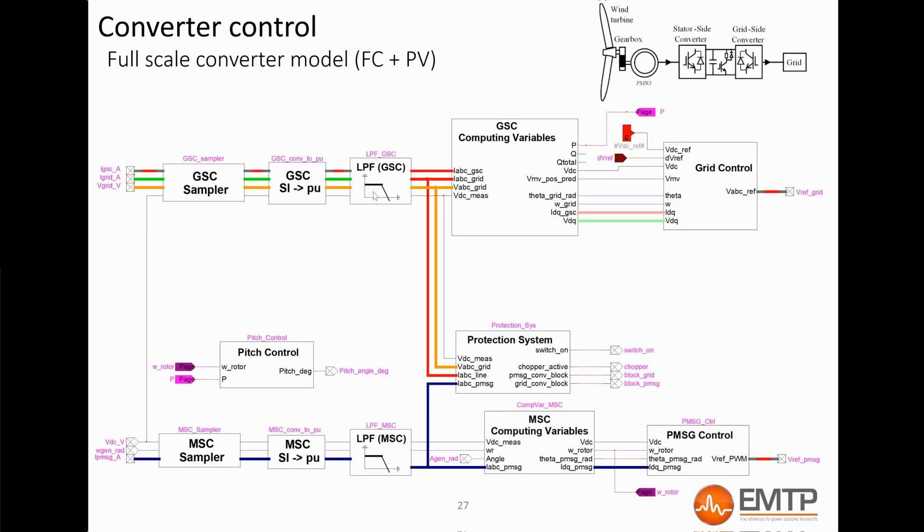Here is the control and protection diagram of the FC wind turbine in EMTP. The sampled signals, which are the voltage and current on each side of the converter, are put in per unit and filtered. The input measuring filters are low-pass type. The compute variables block computes the variables used by the FC control and protection system. In these blocks, you will find PLLs, which are algorithms which determine the voltage angle and frequency and help to achieve the transformation from the ABC domain to the DQ0 domain, which is used for control purposes.